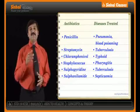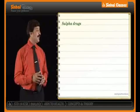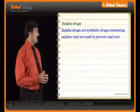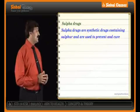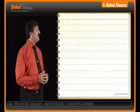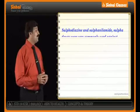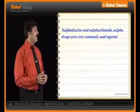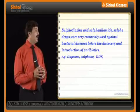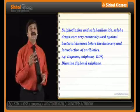As we talk about antibiotics, we also highlight the meaning of sulphur drugs. Sulphur drugs are synthetic drugs containing sulphur and are used to prevent and cure the multiplication of bacteria in the human body. Examples include Dapsone, Sulphur or DDS, and Diamino Diphenyl Sulphur.